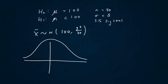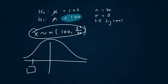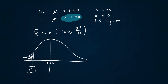It's a lower tail test, so I'm trying to work out what value on this distribution — where the middle is 100 — gives us the point such that getting less than it equals the significance level.